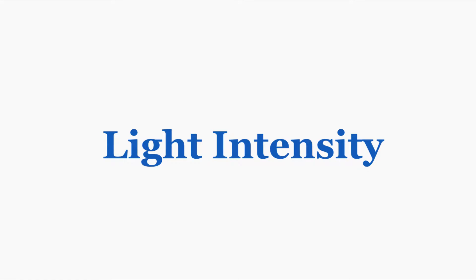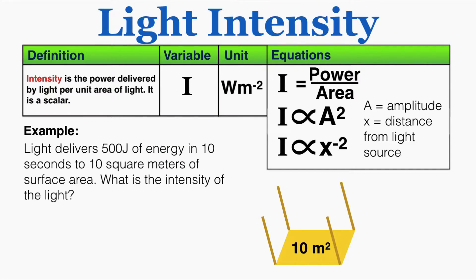This lecture is about light intensity and how to calculate it. Light intensity is the power delivered by light per unit area, and it's a scalar value. The variable for intensity is capital I, and the units are watts per meter squared, which makes sense because it's the amount of power being delivered per unit area — watts for power and meters squared for area.